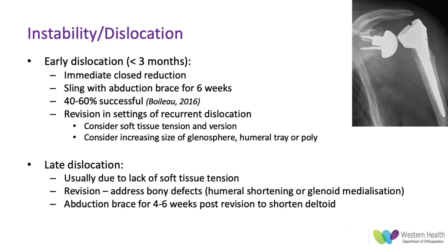In terms of management for dislocation, this is split into early and late. For early dislocation, management is immediate closed reduction, then slinging the patient with an abduction brace for six weeks. A large study by Boileau found this was only successful in about 40% of cases, but up to 60% in the most successful series reported. Recurrent dislocation often requires revision, paying close attention to soft tissue tension, prosthesis version, and considering increasing the size of the glenosphere, humeral tray, or poly to improve stability.